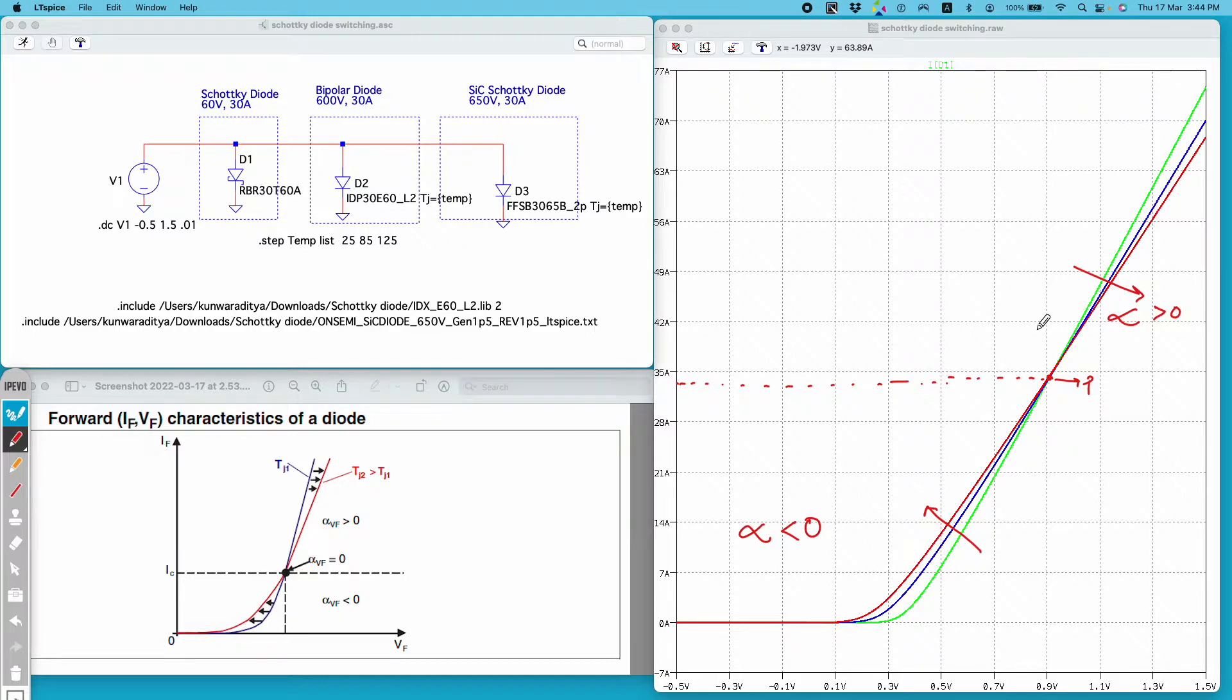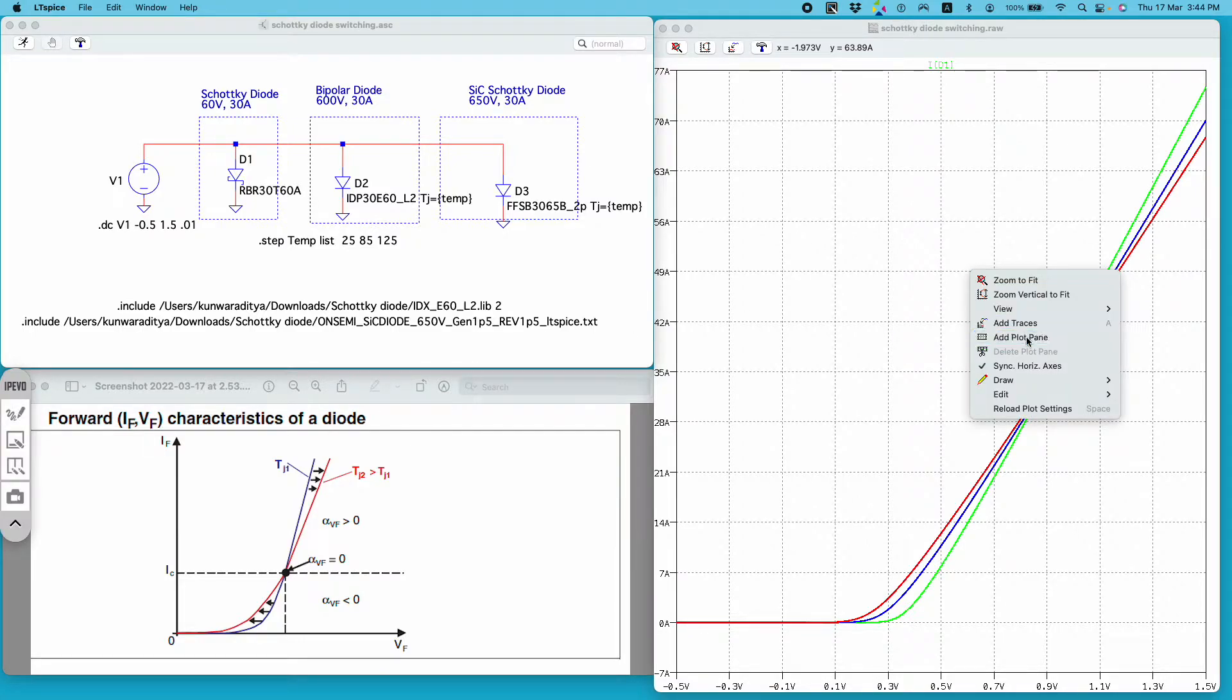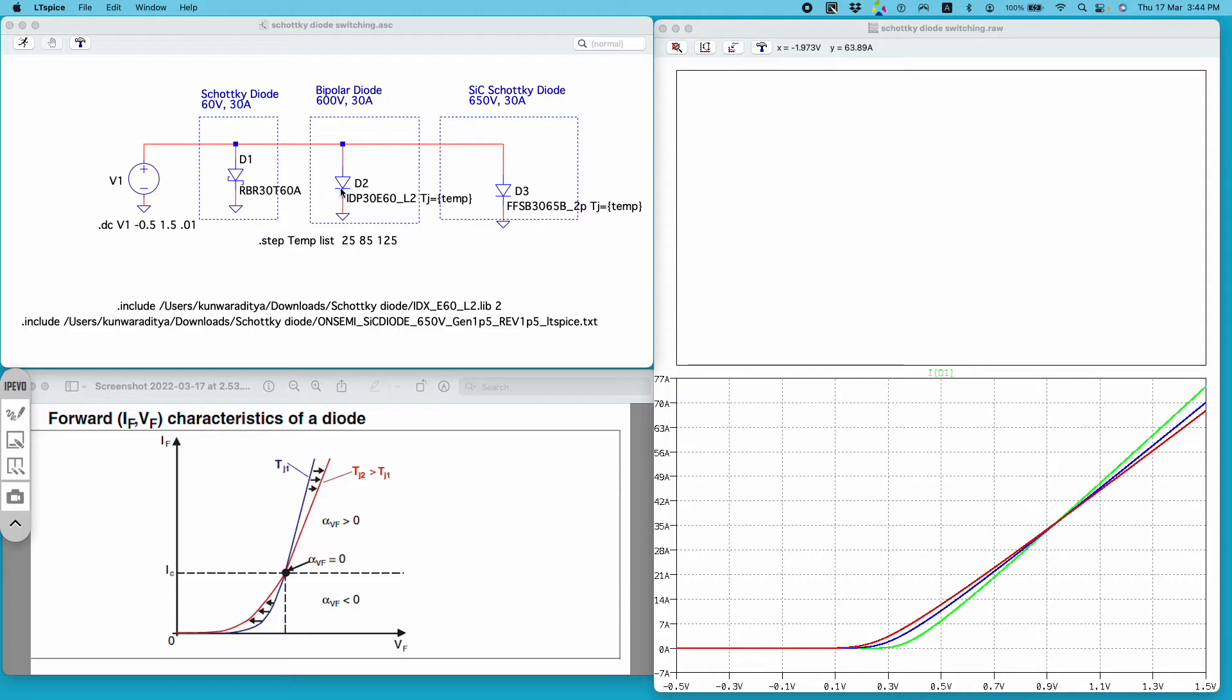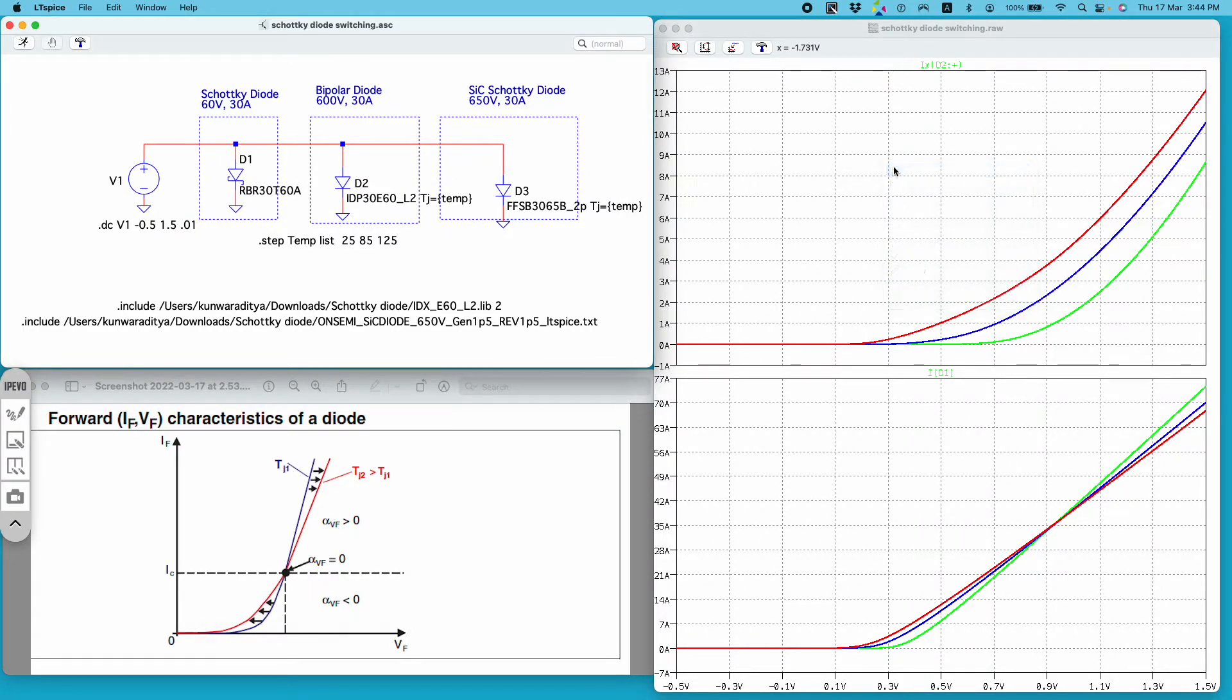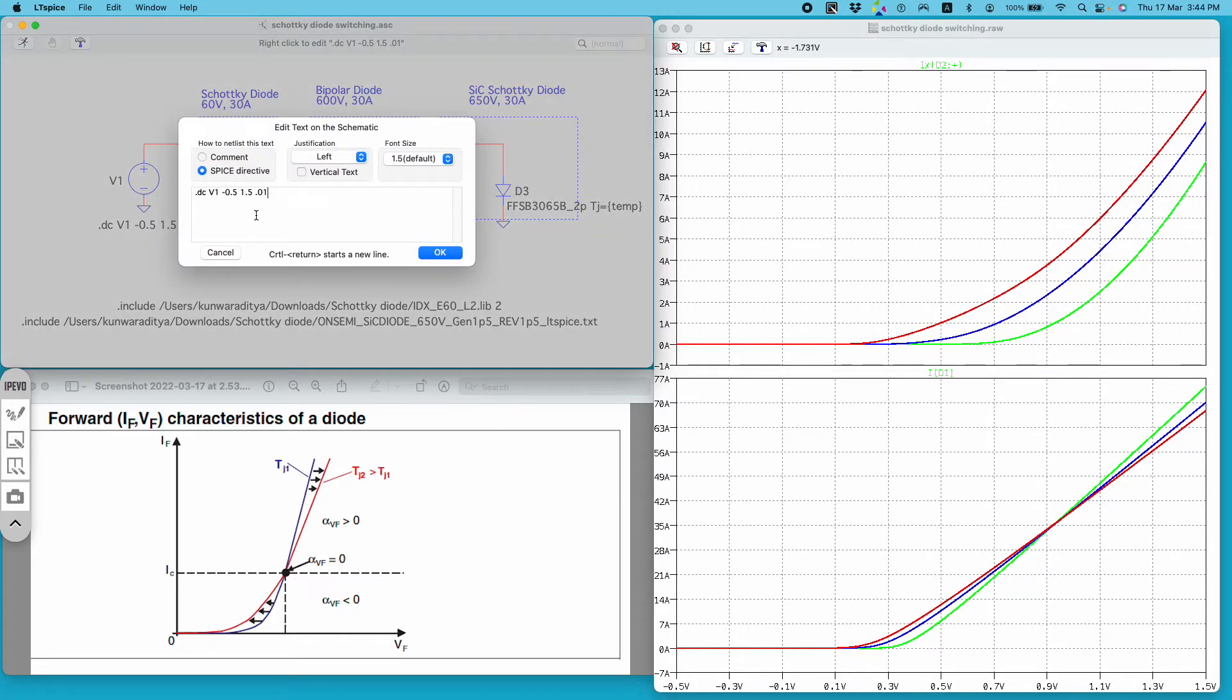And to show you, let me just plot the same IV characteristics for bipolar diode. So the diode D2, this is from Onsemi and it's rated for 600 volt 30 amp. And if I plot the characteristic I will have to sweep to higher voltage because the forward voltage drop of a bipolar device is large compared to Schottky diode.